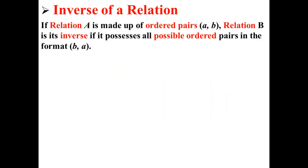Now let's talk about inverse relations. If relation A is made up of ordered pairs (a, b), relation B is its inverse if it possesses all possible ordered pairs in the format (b, a).